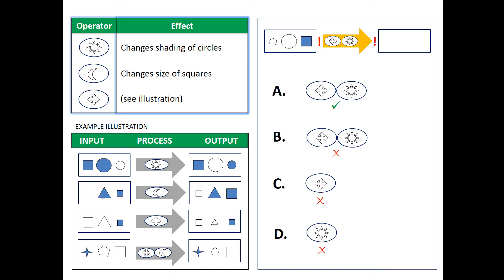This is called diagrammatical reasoning, or in some other circles it may be called operational reasoning assessment. This is typically used for assessing technical people, such as engineers, architects, and programmers.